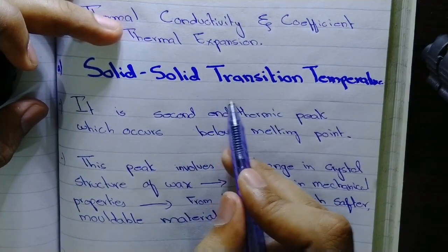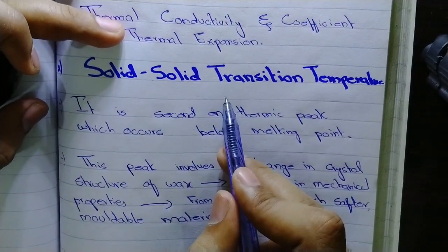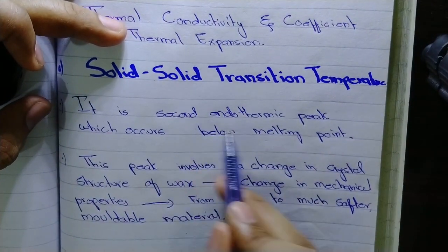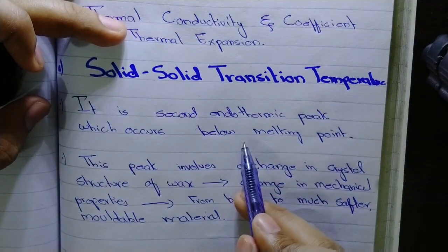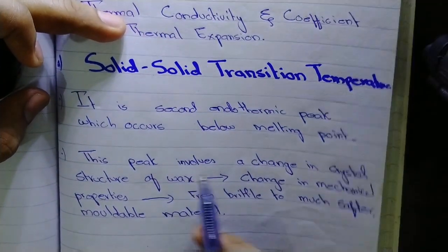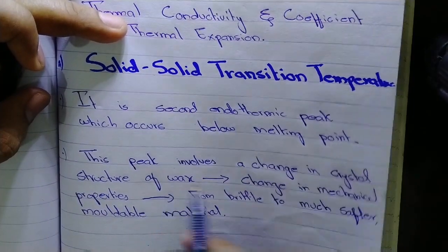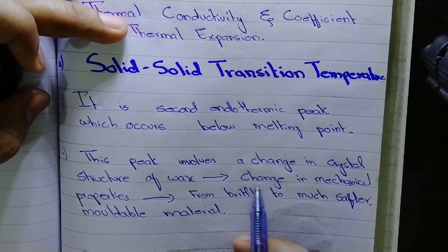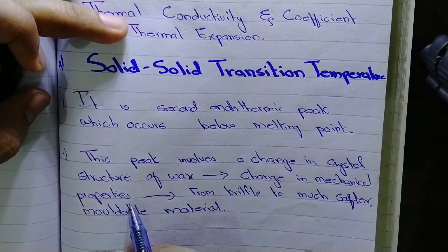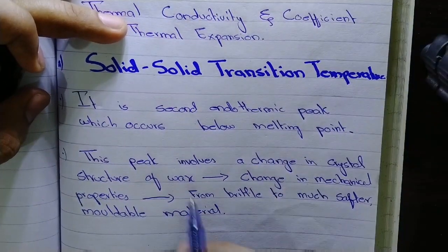Basically it is a second endothermic peak which occurs below melting point, and this peak involves a change in crystal structure which is accompanied by change in mechanical properties, which renders the wax from relatively brittle to much softer moldable material.